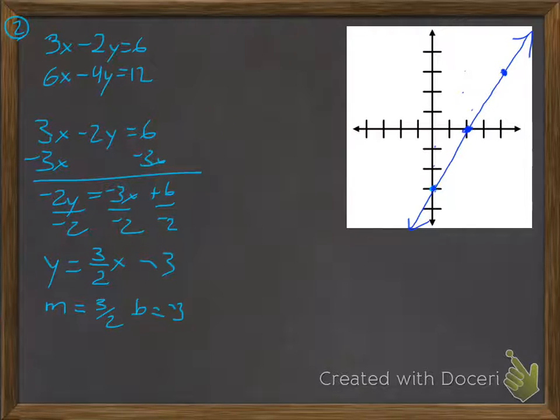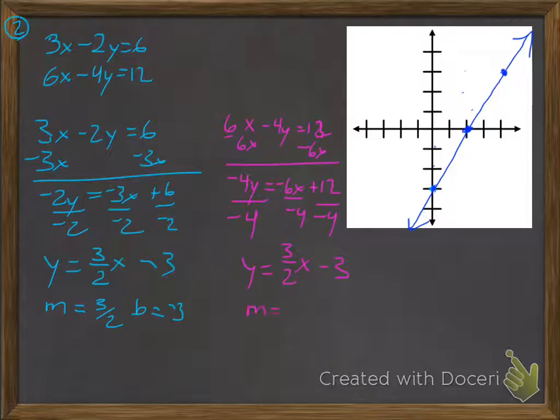So when I go to my next one, 6x minus 4y equals 12. Subtract 6x, negative 4y equals negative 6x plus 12, divide by negative 4. And y is equal to positive 3 over 2x minus 3. My m is 3 over 2, my b is negative 3. And what you should be noticing, when I plot my y-intercept, I do my slope, I end up on that same exact line. So the answer here is infinitely many solutions.